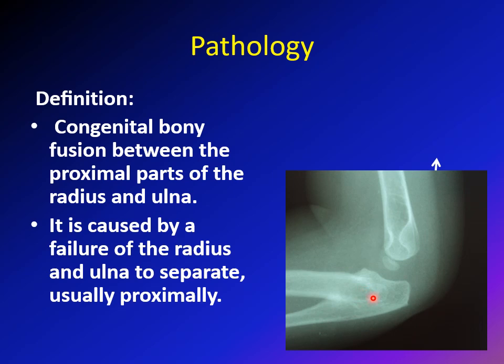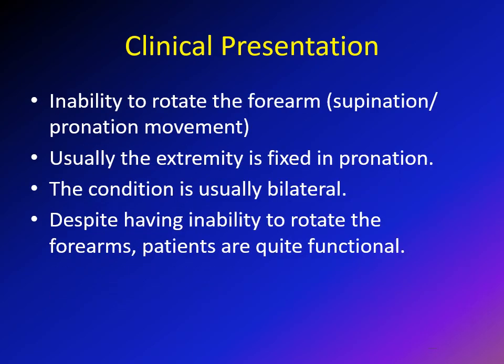The clinical presentation is inability to rotate the forearm. Forearm rotation is the movement between supination — where the palm of the hand faces forward — and pronation — where the palm faces backward. This motion happens mainly through the forearm, between the radius and ulna. If there is fusion between the radius and ulna, the child will not be able to perform forearm supination and pronation.